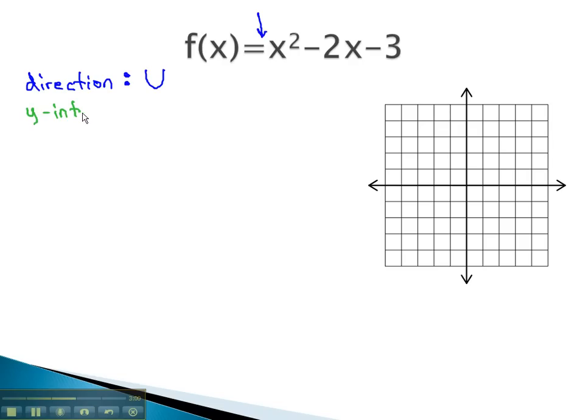Next, we can identify the y-intercept. If x is 0, the only thing left would be the negative 3. This means the graph crosses the y-axis at negative 3. We have the first point on our graph.